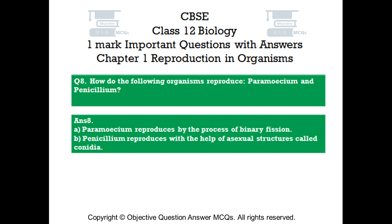Question number 8: How do the following organisms reproduce — Paramecium and Penicillium? Answer number 8: A. Paramecium reproduces by the process of binary fission. B. Penicillium reproduces with the help of asexual structures called conidia.